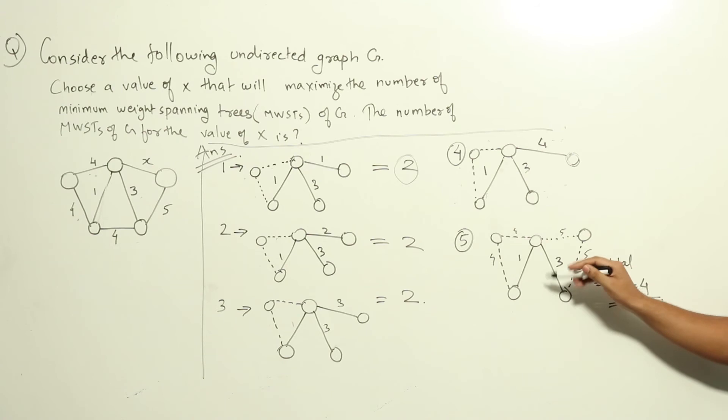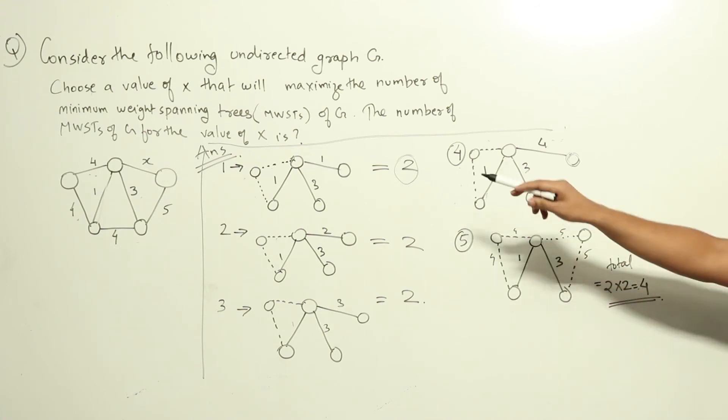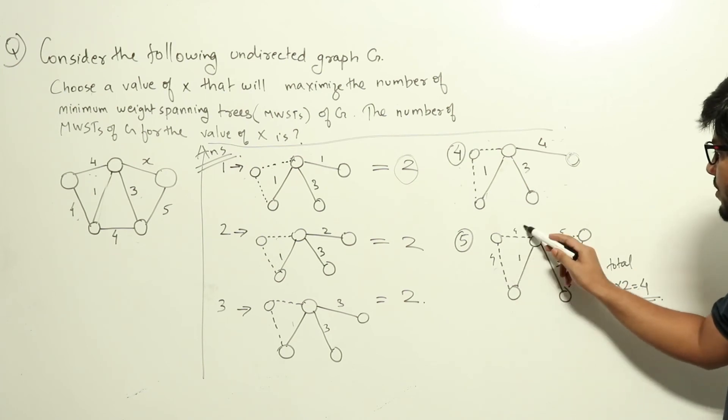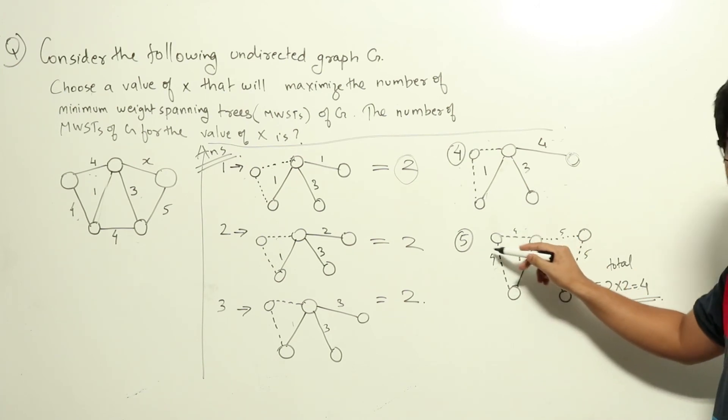So when X is 5 we will be choosing this one. That is the smallest. We take 1. Next second smallest is 3. We choose this. And then coming the smallest will be 4. We can choose either one of these two and that will connect this node.